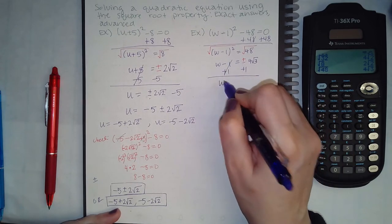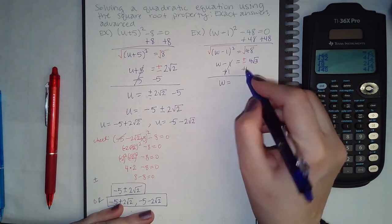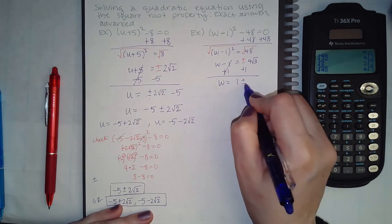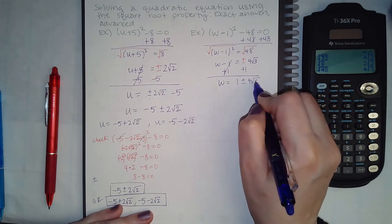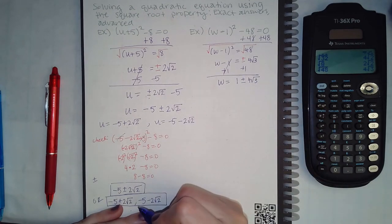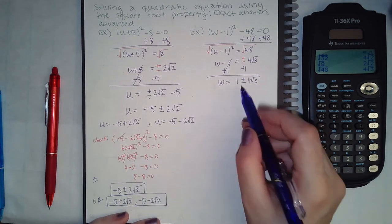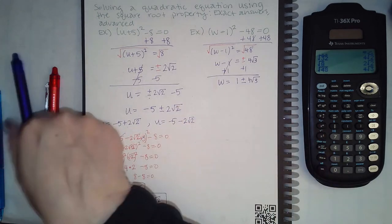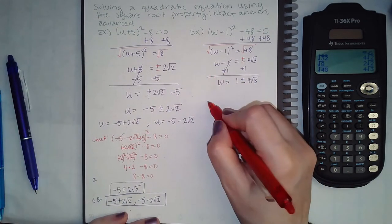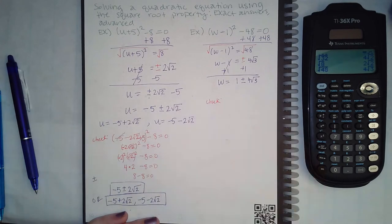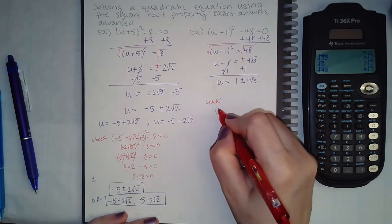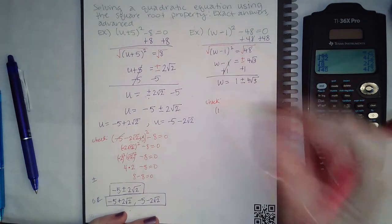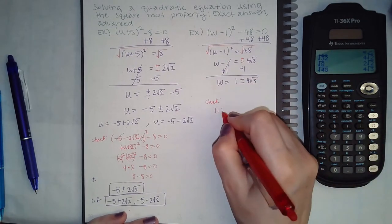So I don't need the parentheses anymore. I'm going to add 1 to both sides, and the formal way to write it is to write the positive 1 in the front, the plus or minus in the middle, and the radical part in the back.